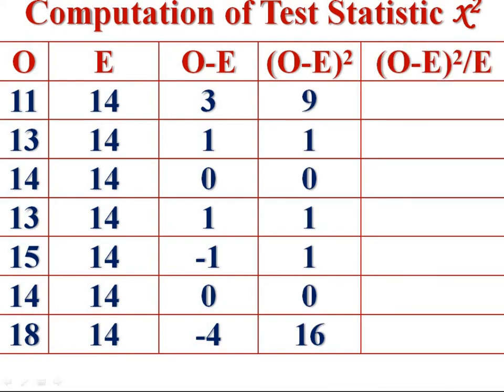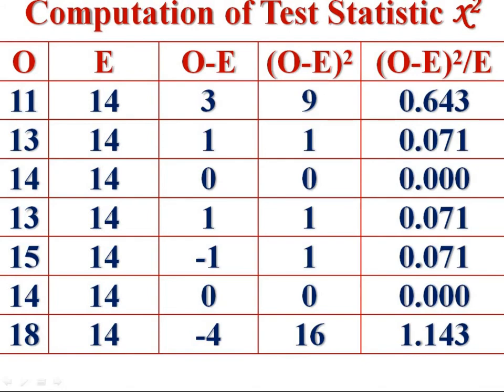In the last column, divide the square deviations, (O-E)²/E, 9÷14 = 0.643, 1÷14 = 0.071 and so on. Get the total of last column, that is, Σ(O-E)²/E. Summation of square deviation divided by expected frequencies, that is, computed test statistic, chi-square equals 2.